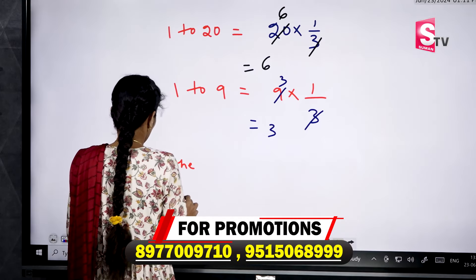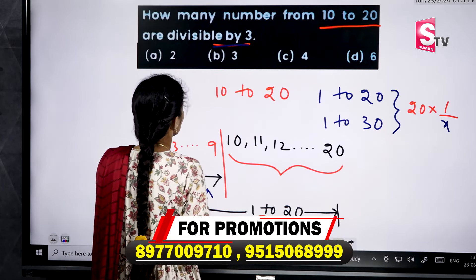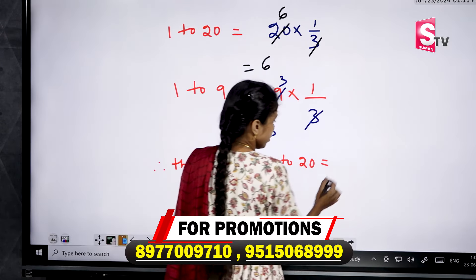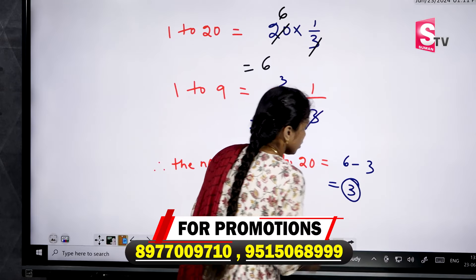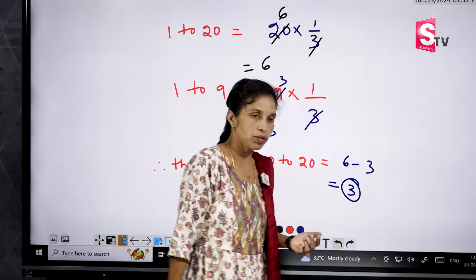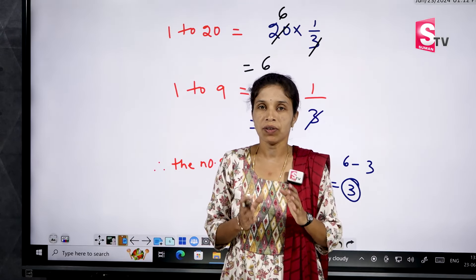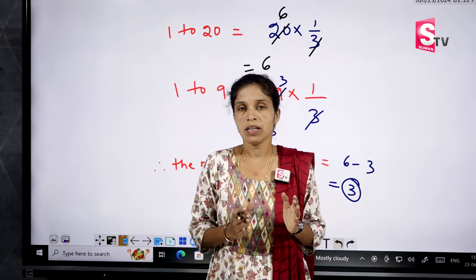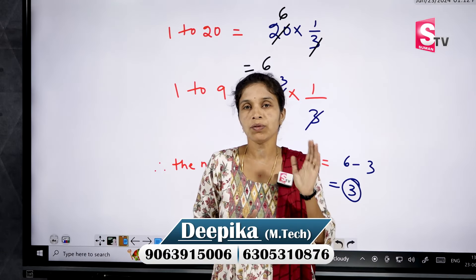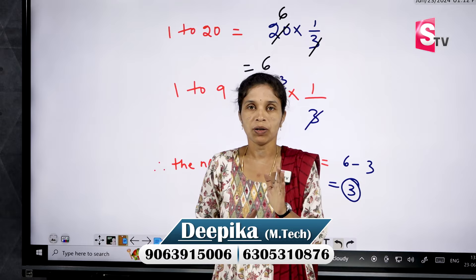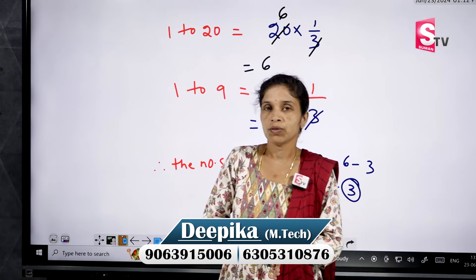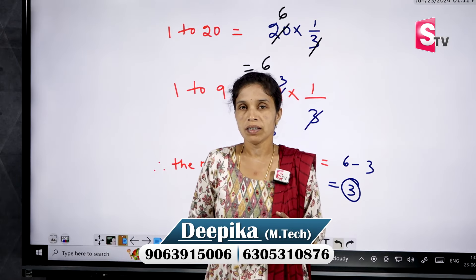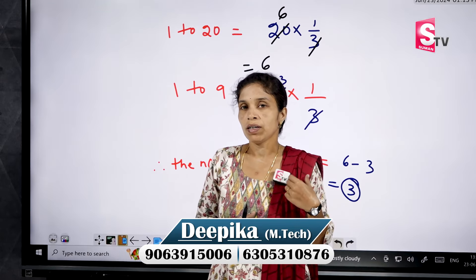Therefore, the number of terms from 10 to 20 divisible by 3 equals 6 minus 3, which is only 3 numbers. In this way we have to do these types of number system questions. First observe what is the question — is it from 1 to 20, or does it start from somewhere else? For example, from 20 to 30: find 1 to 30, then subtract 1 to 20. If you have any doubts, message me in the comment section. We are conducting online classes — if anyone is interested, please call the number displayed on screen. Thank you.